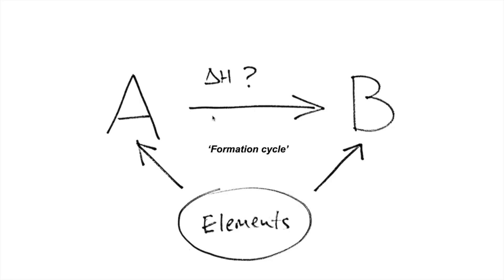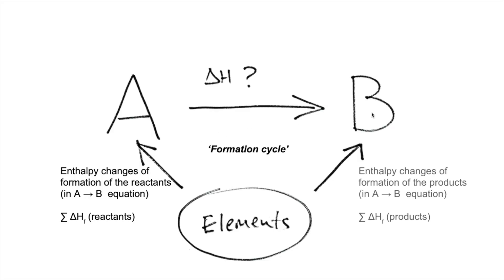So essentially, this arrow here represents the enthalpy changes of formation of the reactants in our A to B equation. And this one here is the enthalpy changes of formation for the products in that equation. If you've got more than one reactant or product, you're going to need to add them together, so we've got the sum of in both of those.